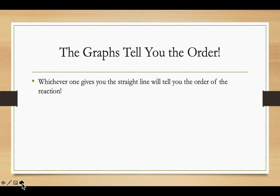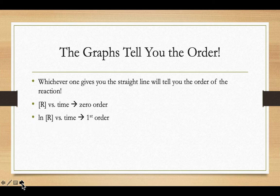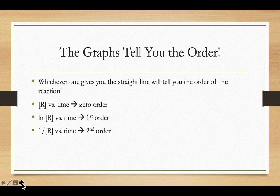The graphs tell you the order: whichever one gives you a straight line tells you the order of the reaction. Concentration versus time — straight line means zero order. Natural log of concentration versus time — straight line means first order. Inverse of concentration versus time — straight line means second order. The College Board only expects you to know zero, first, and second order; they would not expect you to identify third or fourth order from a graph alone.